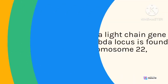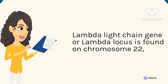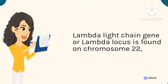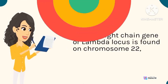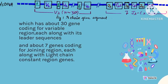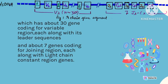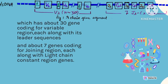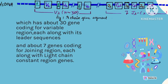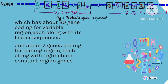The lambda light-chain gene, or lambda locus, is found on chromosome 22, which has about 30 genes coding for the variable region, each along with its leader sequences, and about 7 genes coding for the joining region, each along with light-chain constant region genes.